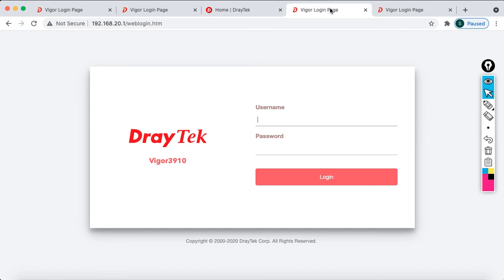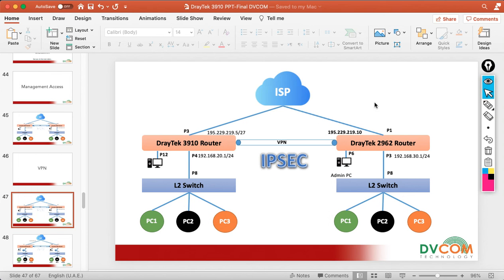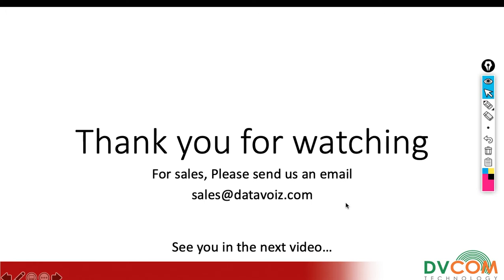This is how you configure VPN between two locations using IPSec IKE version 1. Thank you for watching. For sales inquiries, please send us an email at sales@datawise.com.